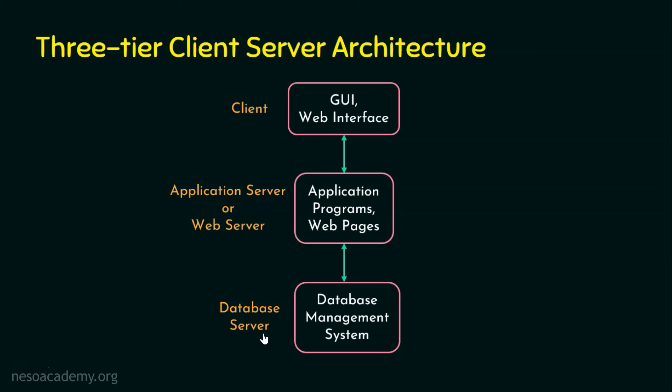Why do we want these three tiers? Because each tier can be developed simultaneously by a separate development team for effective utilization of resources. Each tier runs on its own infrastructure, and these tiers can be scaled or updated without disrupting other tiers. For example, if any update is carried out on the presentation tier, it need not affect other tiers — we can scale or update tiers independently.